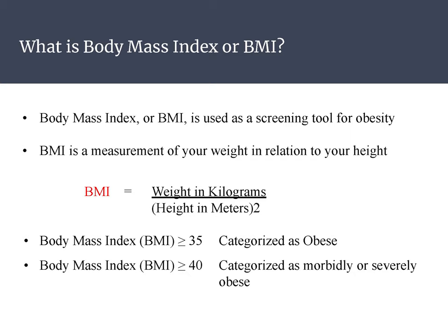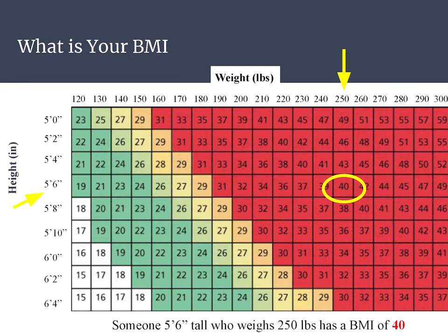So how do we define obesity? It's a body mass index of 35 to 40 or greater. The body mass index is used as a screening tool for obesity — it is a measurement of your weight in relation to your height: weight in kilograms over height in meters squared. You can easily calculate this on your phone. A BMI greater than 35 is characterized as obese, and a BMI greater than 40 is characterized as morbidly or severely obese. Here is an example chart showing a woman of five feet six inches weighing 250 pounds with a calculated BMI of 40.